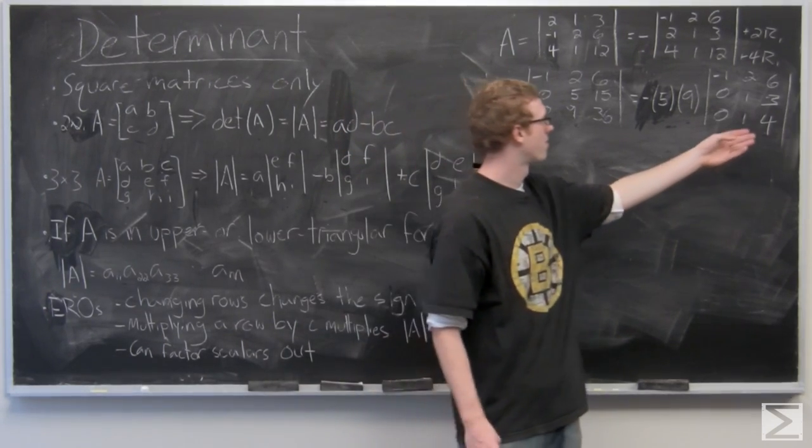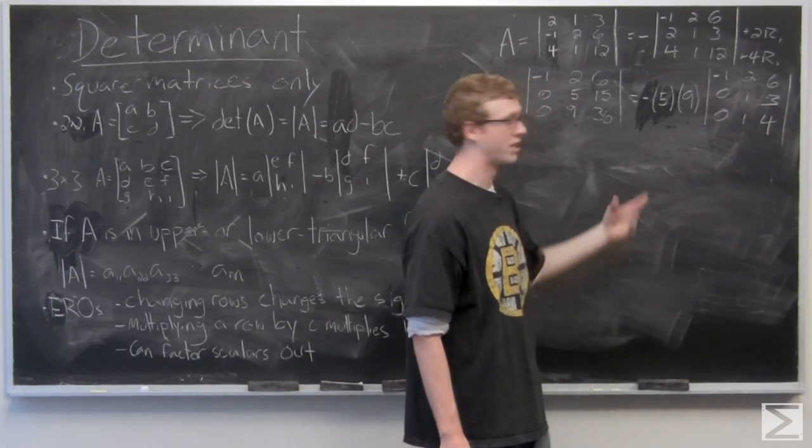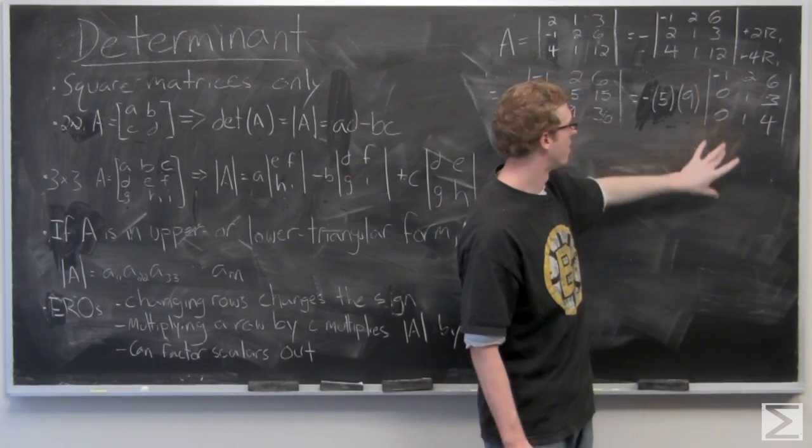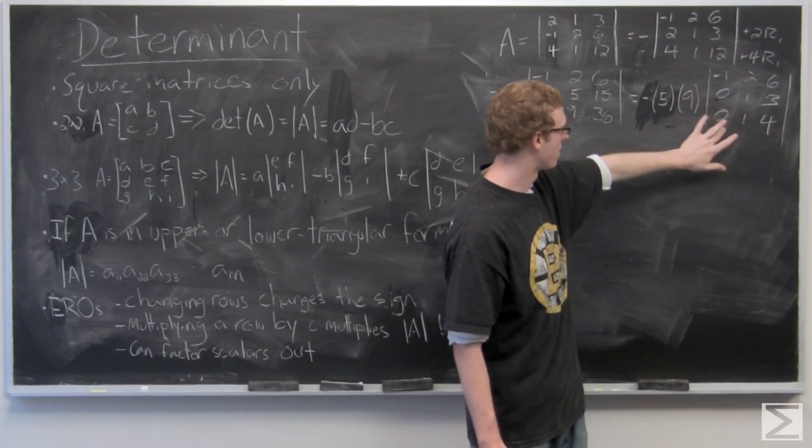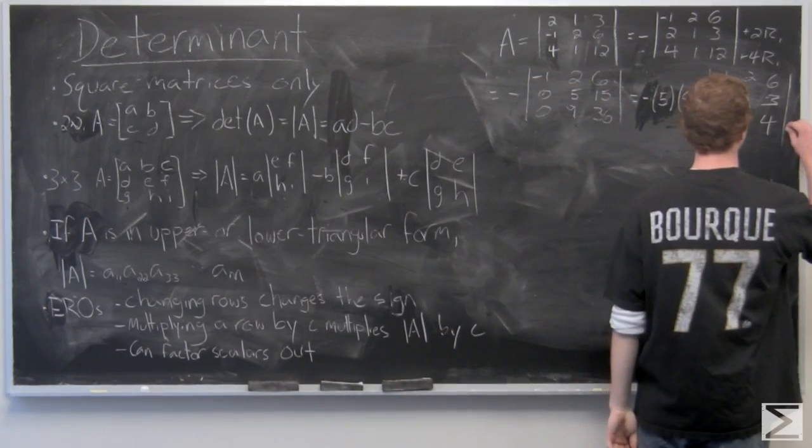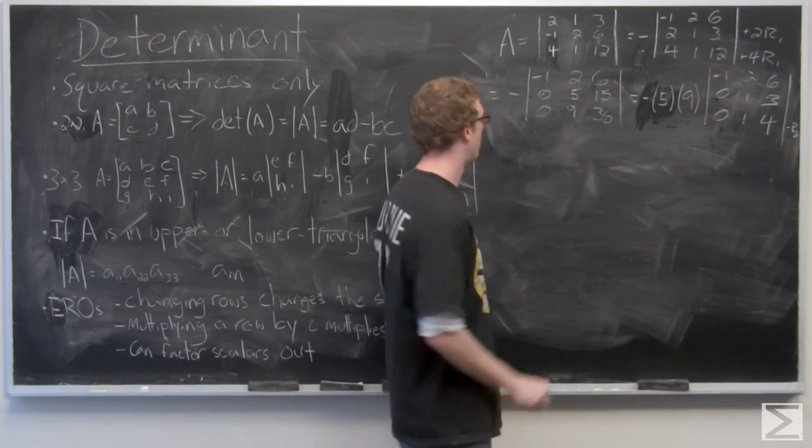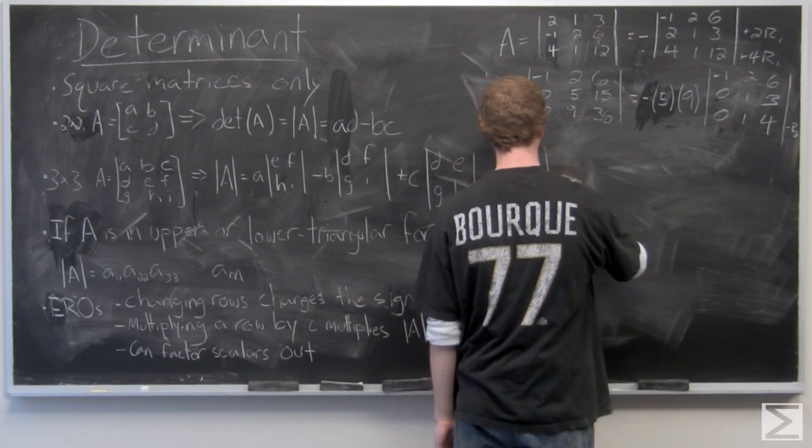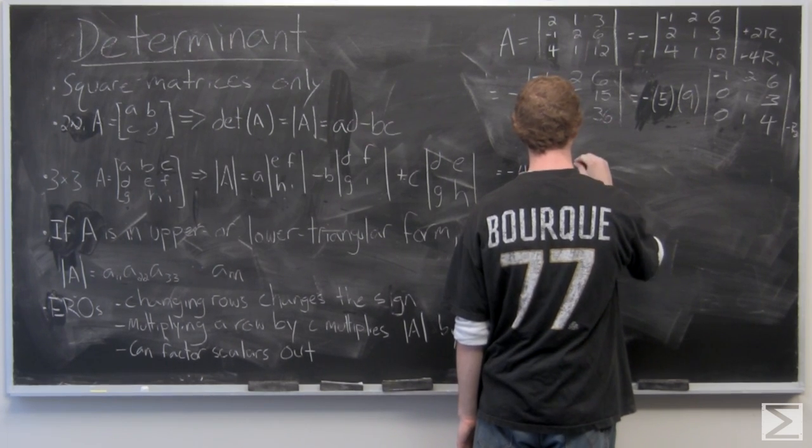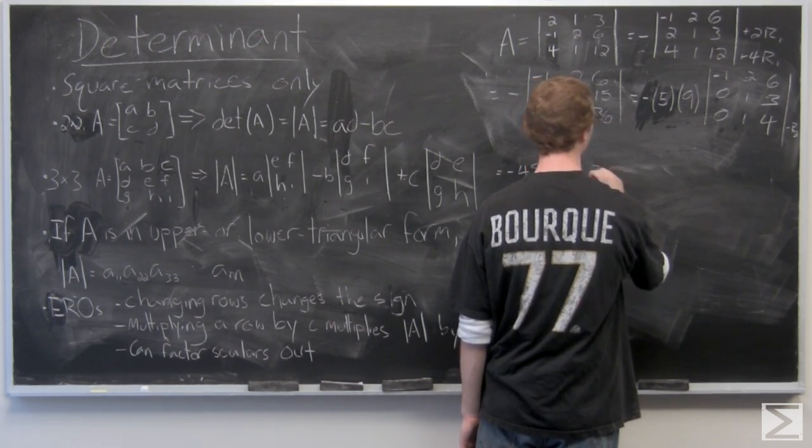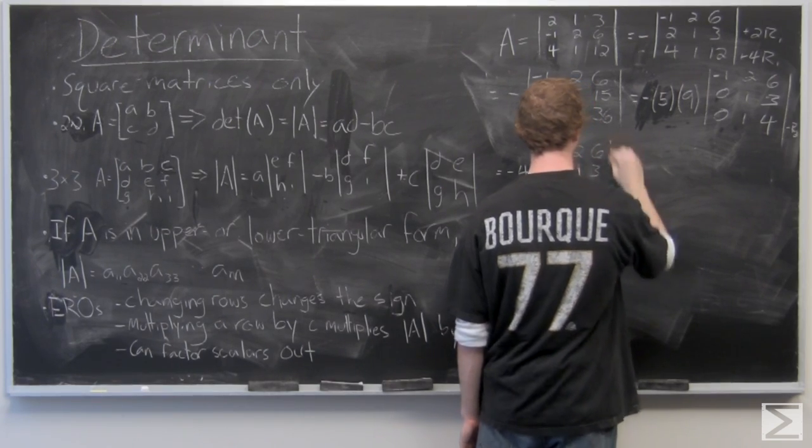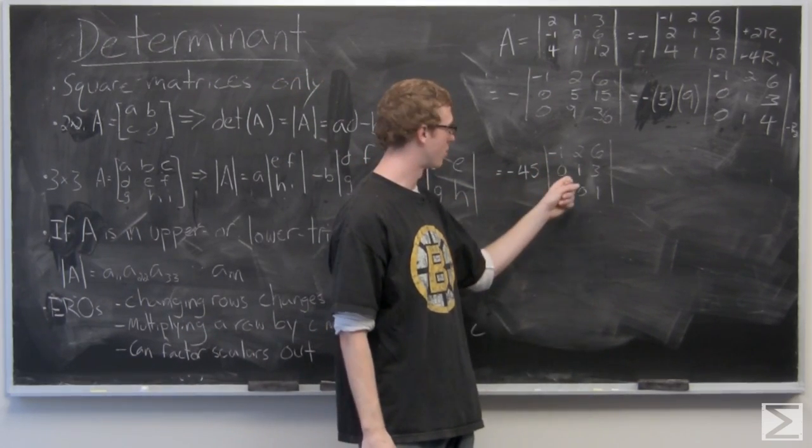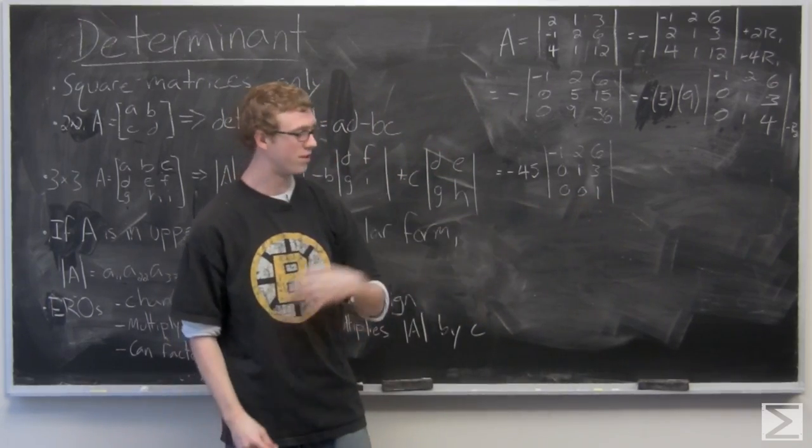Basically, all we need to do now is just subtract row three, excuse me, row two from row three. So we can get rid of this one. And that way the main diagonal will be filled with numbers, but it will be an upper triangular form because these three numbers will be zero. It's hard to see there, but that's a minus row two. So now we have it in upper triangular form. Just multiply along the diagonal. Negative one times one times one times negative 45 is going to equal 45.